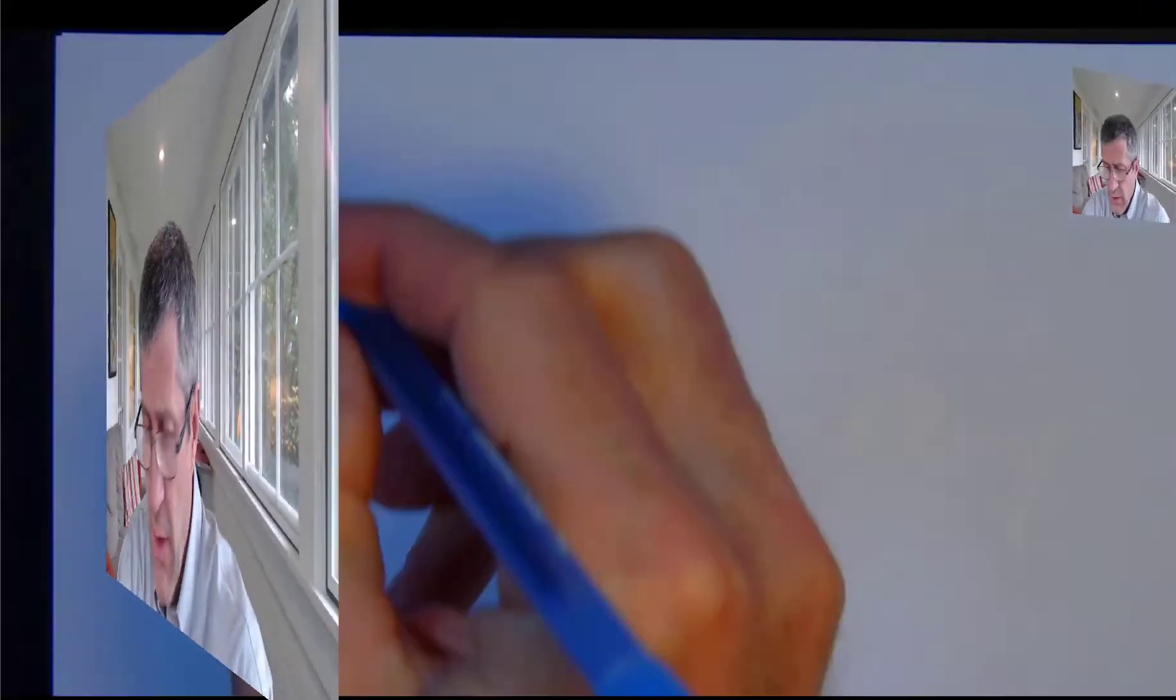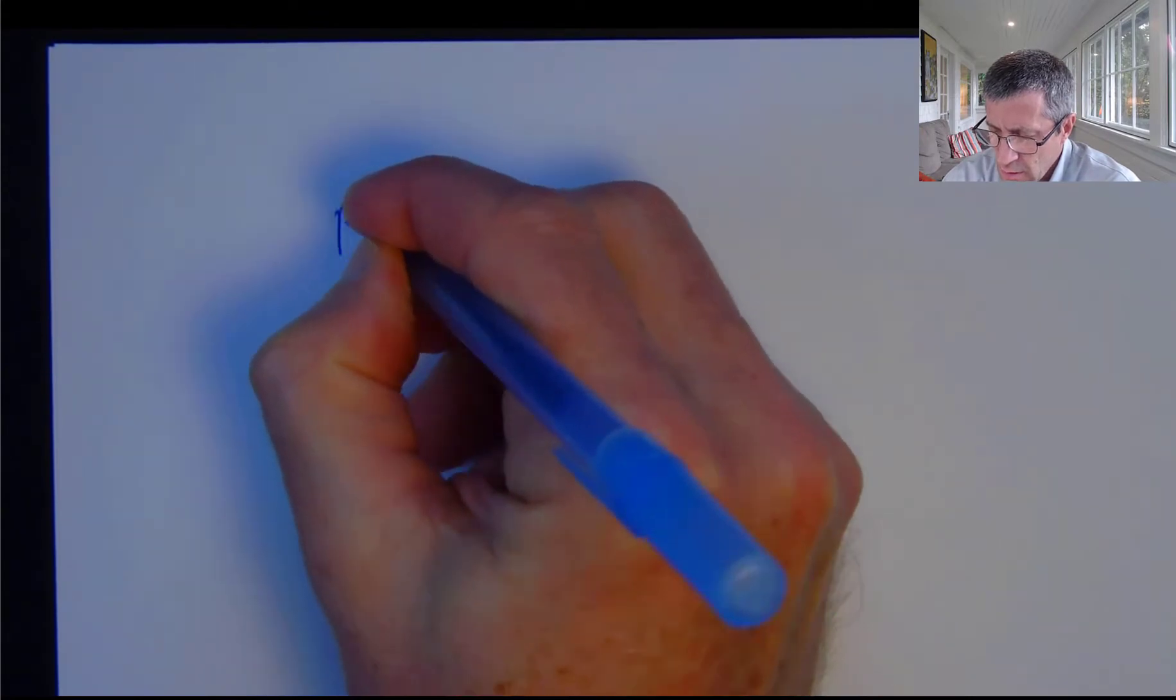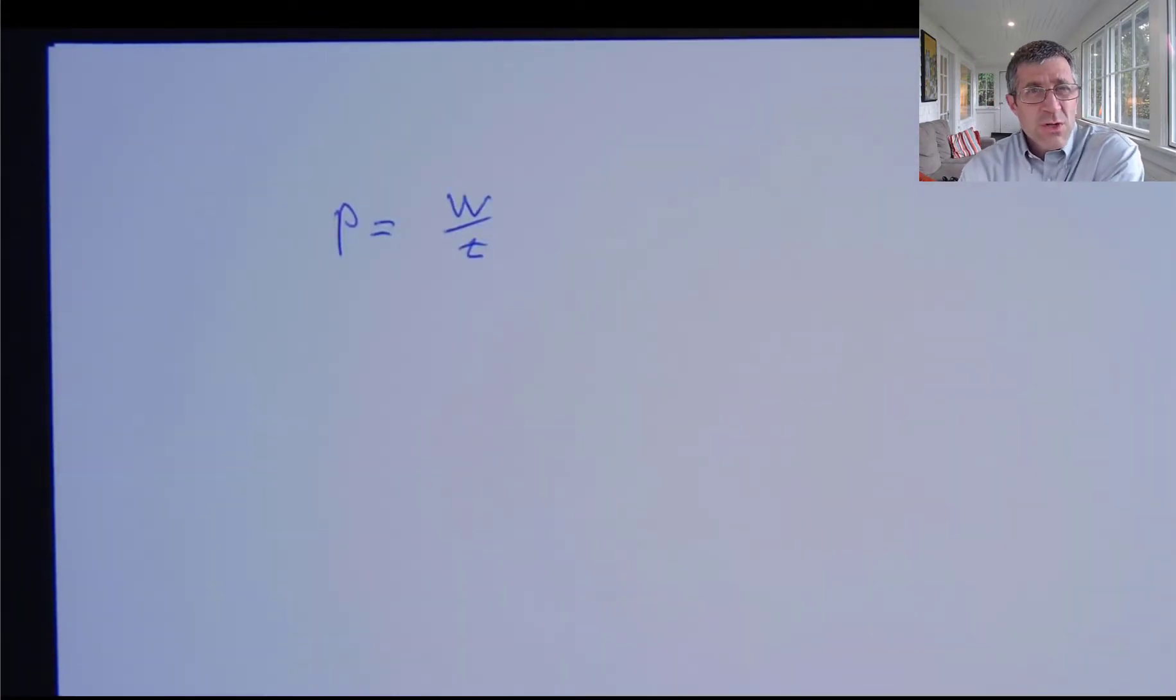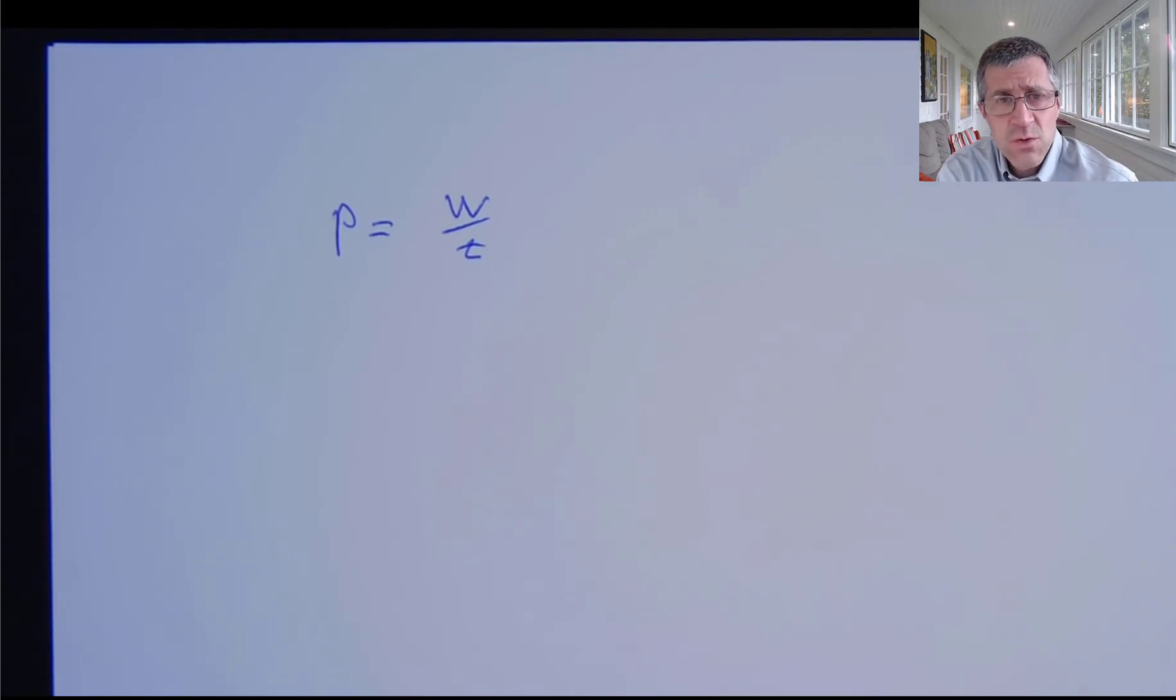I wanted to describe for you the idea of power and how that's used in physics. We're going to have two formulas that we can use. The first one is the simple definition. Power generally is the amount of work done per time. So power is a measure of how fast you're spending energy.